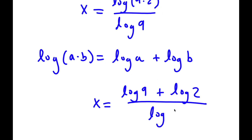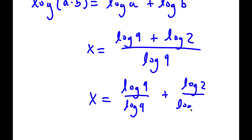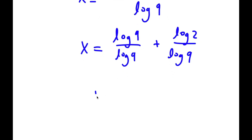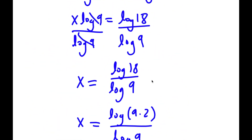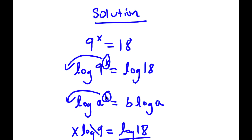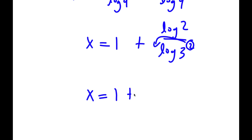Now I have this over log 9, which is the same thing as log 9 over log 9 plus log 2 over log 9. Log 9 over log 9 is simply equal to 1. So I have 1 plus log 2 over log 9. I can rewrite log 9 as log 3 squared, and since log a to the power of b equals b times log a, I can move 2 to the front. So now I have 1 plus log 2 over 2 times log 3.